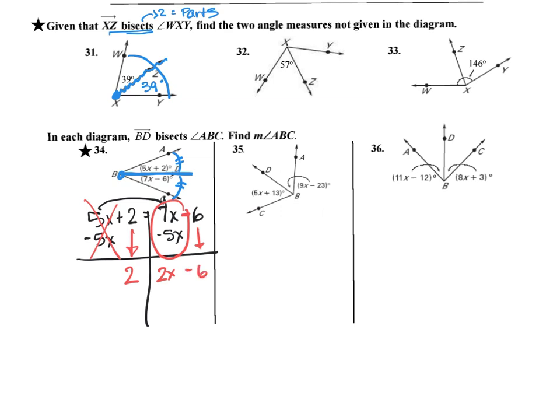Then I have to bring the 6 back to the other side. So I will add 6. 2 plus 6 makes 8. Bring down the 2x. And the minus 6 plus 6 makes zero. Last step is to divide by 2. 8 divided by 2 equals 4 equals x.